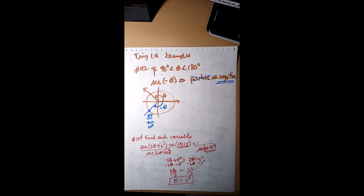Number 104: find the value of θ given sec(2θ + 6°) · cos(5θ + 3°) = 1. Using the reciprocal identity cos θ = 1/sec θ, the angles must be equal: 5θ + 3° = 2θ + 6°. Subtracting 2θ from both sides: 3θ + 3° = 6°. Subtracting 3°: 3θ = 3°. Dividing by 3: θ = 1°. You should be able to do all the chapter one review exercises — make sure you label them correctly and send them in to be graded.